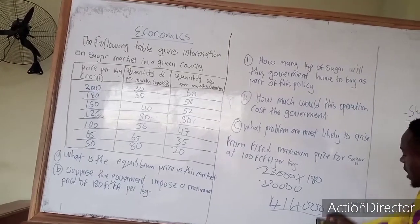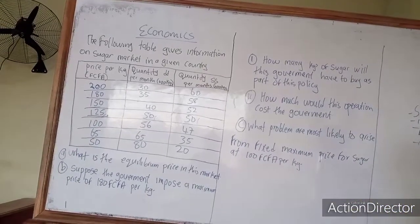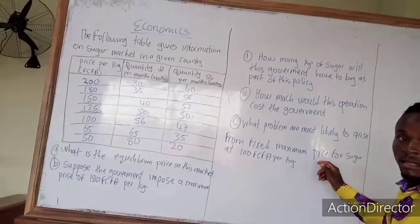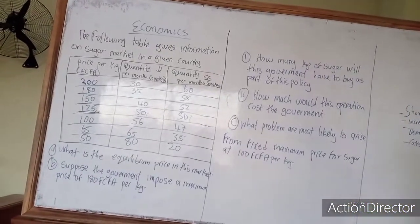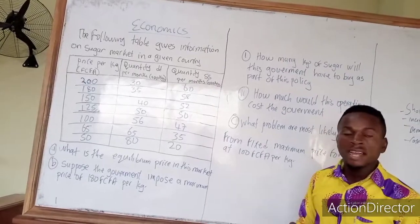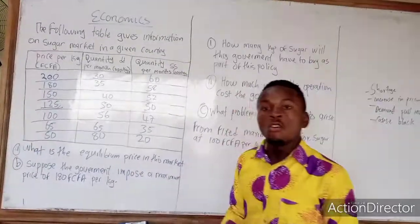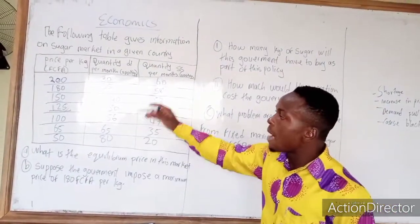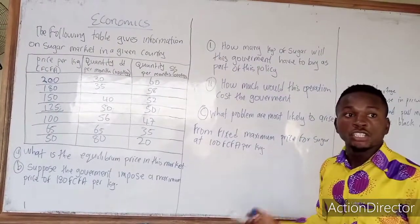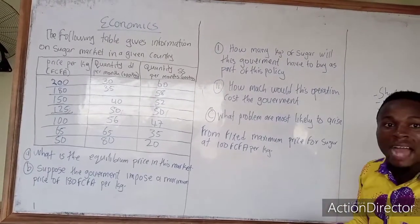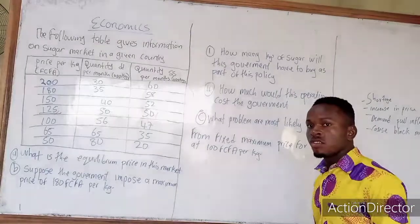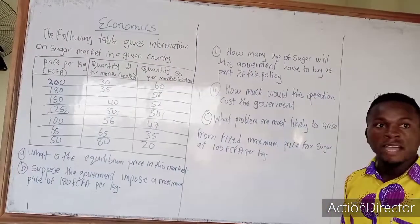The next question asks: what problems are most likely to arise from the fixed maximum price of sugar at 100,000 per kilogram? First, let me explain: a maximum price is set below the equilibrium price, while a minimum price is set above the equilibrium price. Problems from this fixed maximum price include shortage, an increase in the price of goods and services, black marketing, and demand-pull inflation — which is a steady increase in the general price level caused by excess demand.